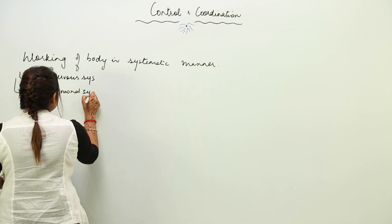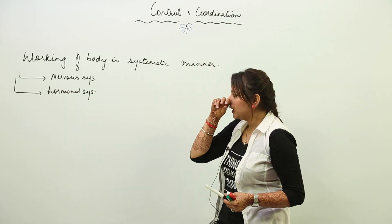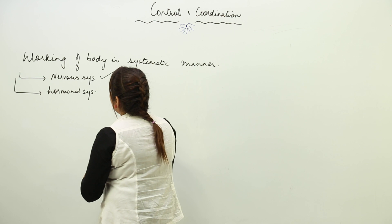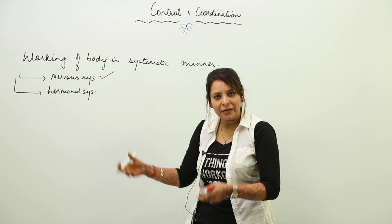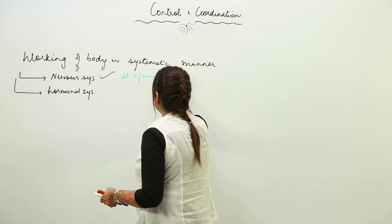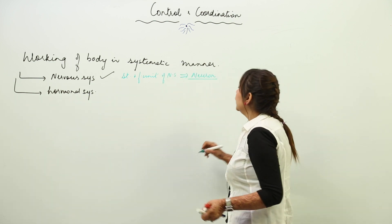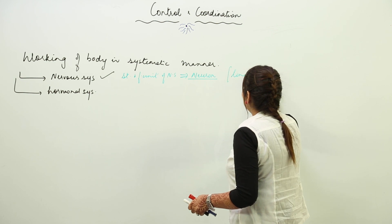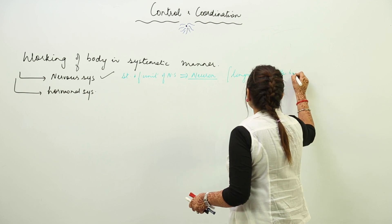These two systems help in the coordination of different organs of the body. First, we are going to start with the nervous system. The nervous system is an organ system, so it consists of organs, tissues, and finally cells. The structural and functional unit of the nervous system is the neuron. Moreover, neuron is the longest cell of the body.